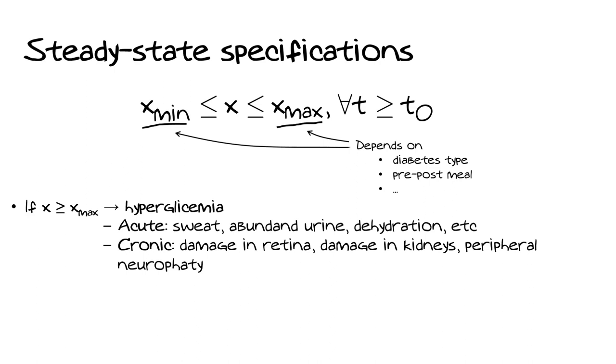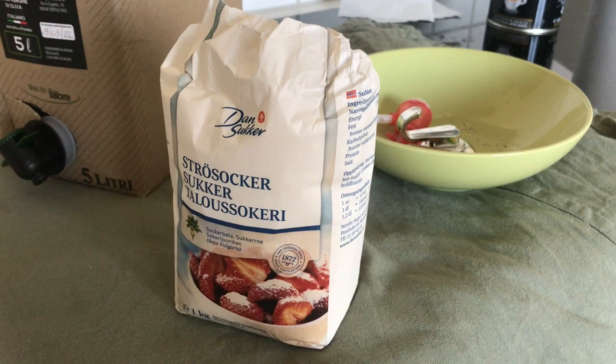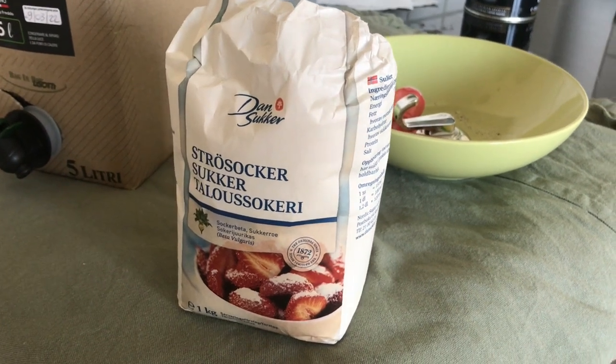But if glycemia goes too far below X-min, the situation gets way more dangerous, so we really have to pay attention to how much insulin is released. A small curiosity: given that hypoglycemia is more dangerous than hyperglycemia, people affected by diabetes always carry a lump of sugar. If they self-inject too much insulin and go into hypoglycemia, they can immediately eat sugar to restore an acceptable level of glucose in their blood.